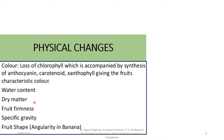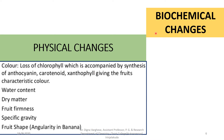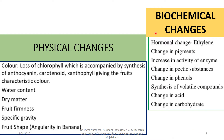Further physical changes include change in water content, fruit firmness, specific gravity, fruit shape, and angularity (as in banana). Biochemical changes involved in ripening include hormonal changes — the fruit produces more ethylene, which acts as the natural fruit ripening agent — change in pigments, increase in enzyme activity, change in pectic substances, change in phenols, synthesis of volatile compounds, change in acid, and change in carbohydrate.